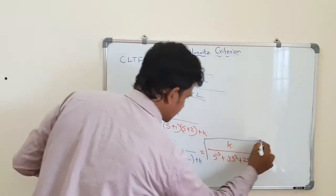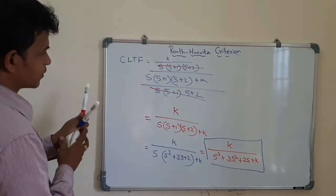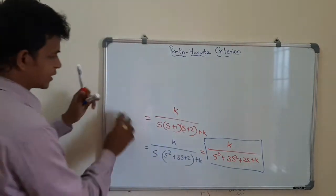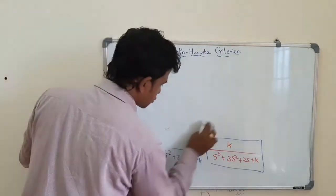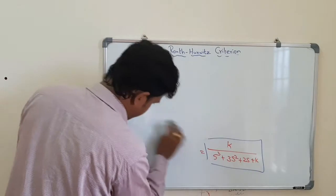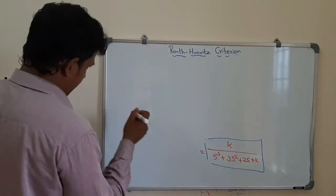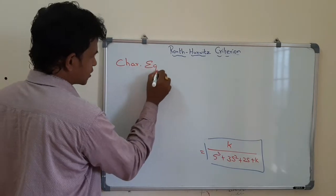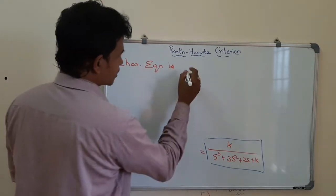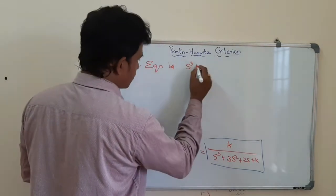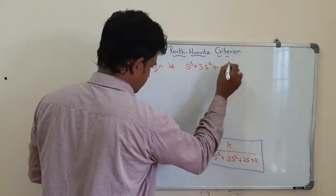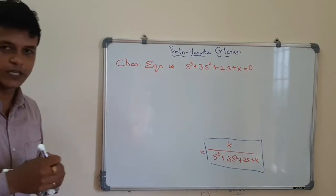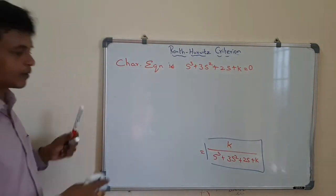So now we can get the closed loop transfer function. Now we can get the characteristic equation. The characteristic equation is obtained by setting the denominator equal to zero. The characteristic equation is s³ plus 3s² plus 2s plus k equal to 0.